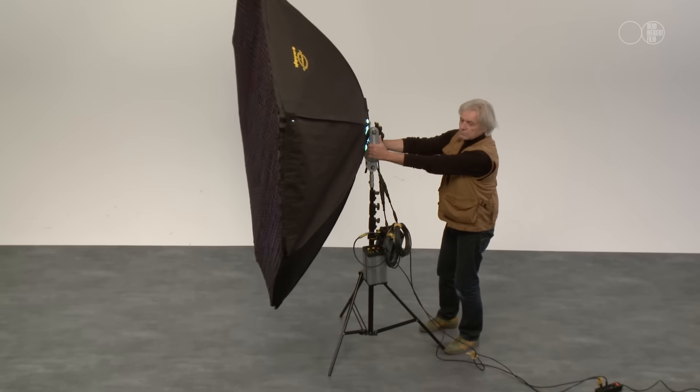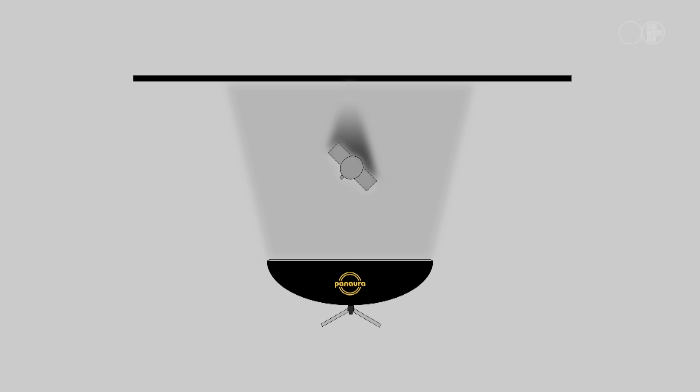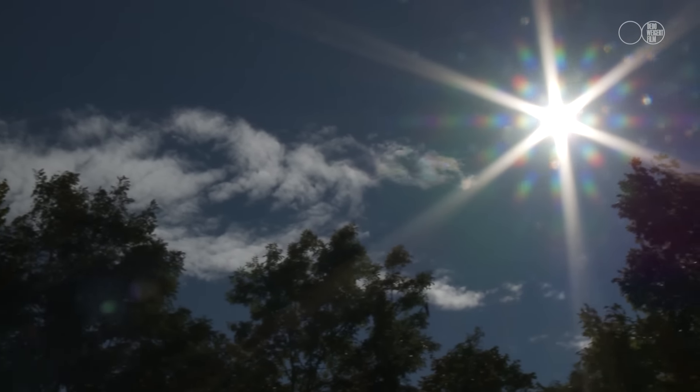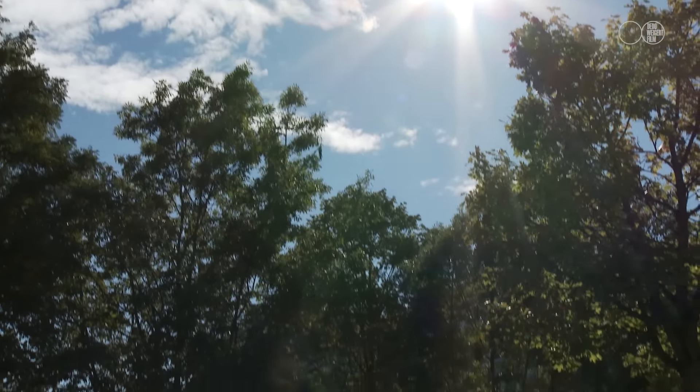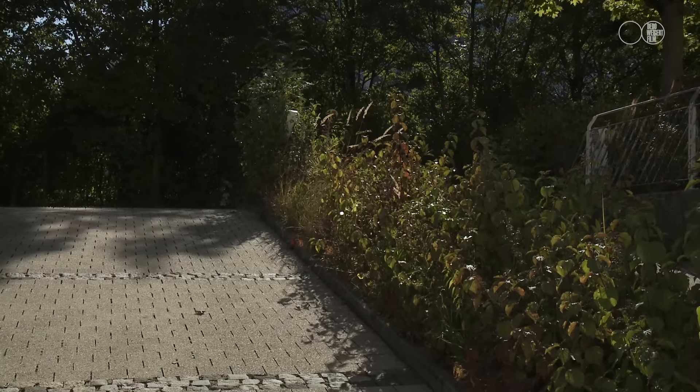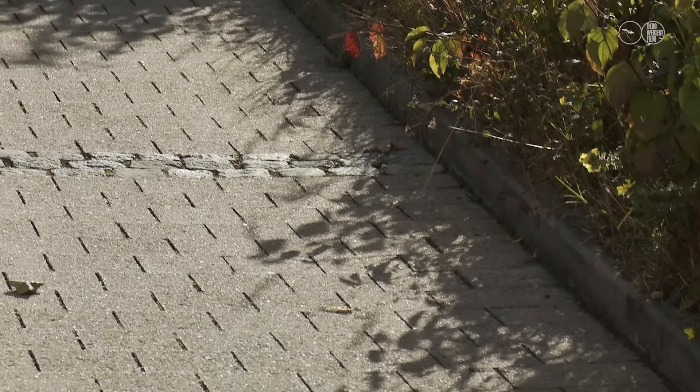A soft light — even the Pan Aura 7 with its uniquely different character — will only show its true wrap-around character when used at a distance that does not really exceed more than 2 or 3 times the diameter of the light fixture itself. To take it to another extreme, look at the Sun, which has a diameter many times larger than the Earth, but because it is very far away, it creates hard shadows and acts like a point light source. The Sun has a diameter of nearly 1.4 million kilometers, while the small Earth can only offer 12,800 kilometers. In other words, if you place a soft light very far away, its wrap-around character diminishes and it starts acting like a hard light source.